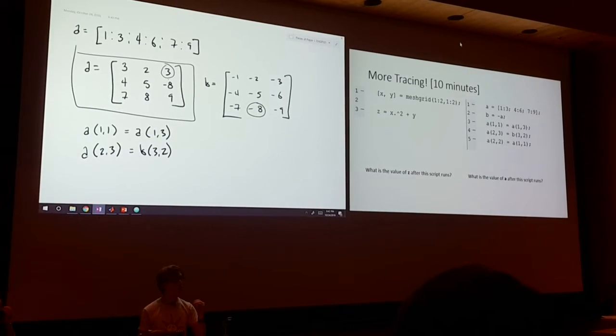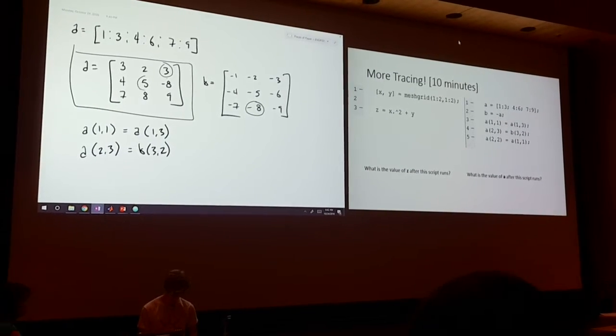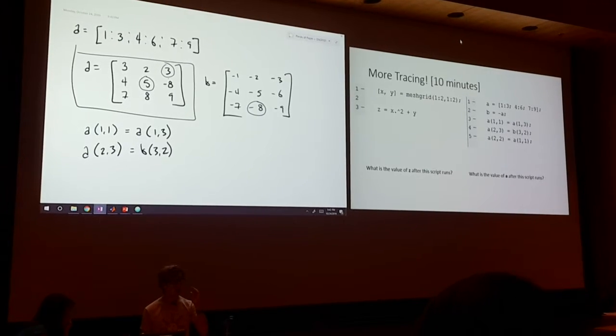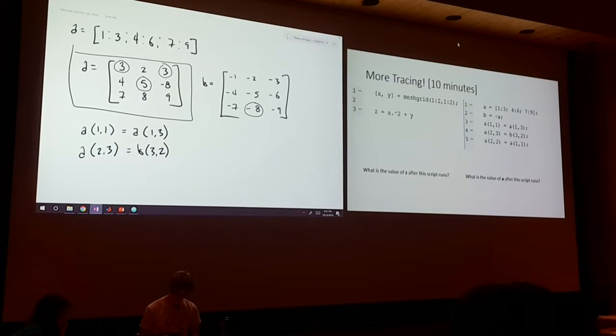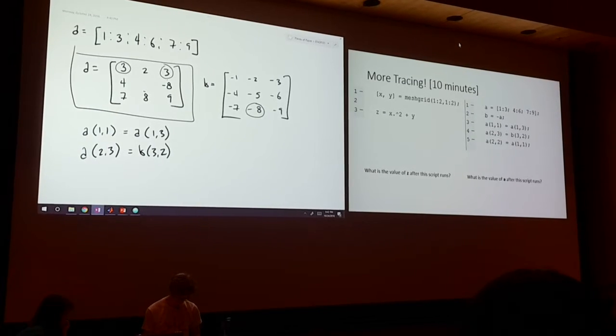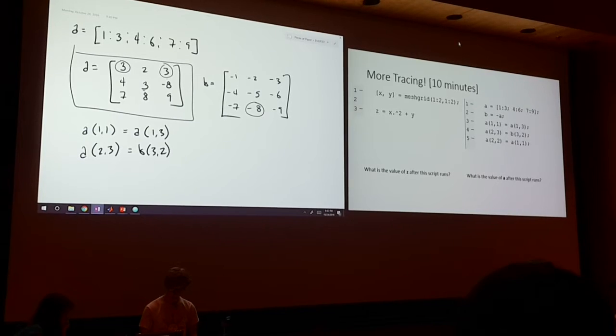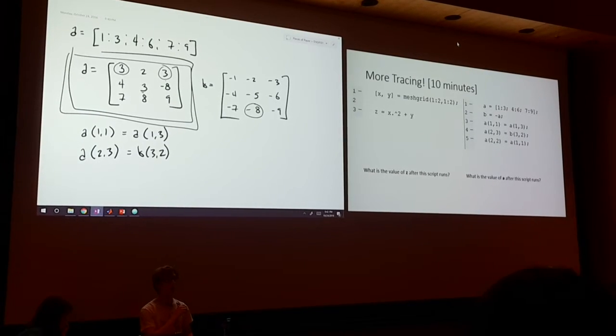And now, A of 2, 2, which is this element here, now becomes what A of 1, 1 is, which is this element here. And we have this. And this is our final picture.